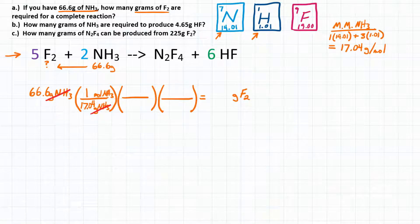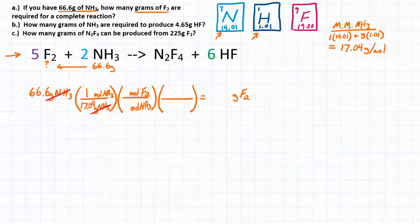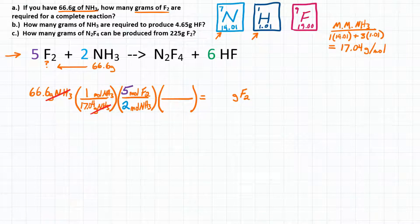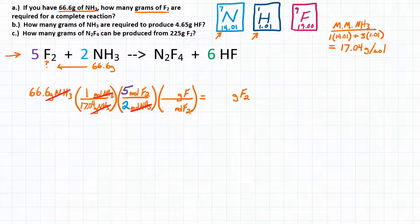Now for the second step, we are currently at moles of NH3, so moles of NH3 will go on the bottom. We can convert that to moles of F2 using our mole ratios from the coefficients. In front of NH3 we have a coefficient of 2, and in front of F2 we have a coefficient of 5. So moles of NH3 cancel, and we're left at moles of F2, which we want to convert to grams of F2 in the last step.